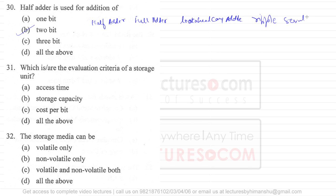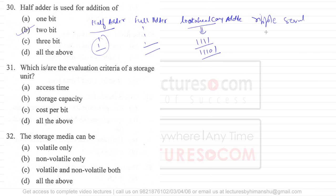The half adder is used to add two bits of information. The full adder is used to add three bits of information. The look-ahead carry adder is a combination that can be created using half adder or full adder to add some combination of bits. So question 30 answer: the half adder adds two bits of information.